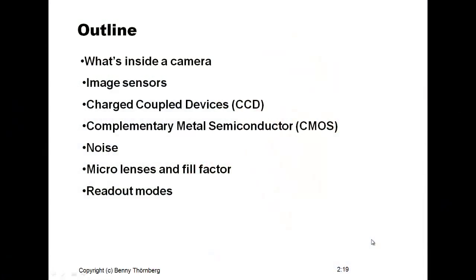The outline of my talk will start from what's inside a camera — what components you find inside. The image sensors of course, including charge coupled devices and CMOS detectors. We will discuss noise and microlenses that can be used to improve the signal-to-noise ratio. Fill factor is an important parameter in this area. We will also discuss readout modes and the consequences from different schemes of reading out the pixels.